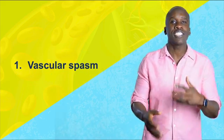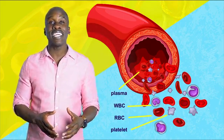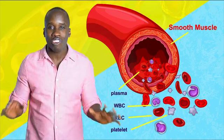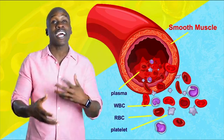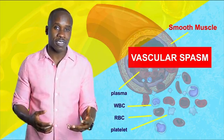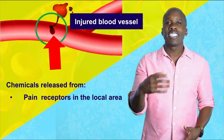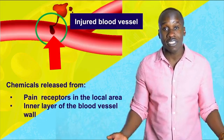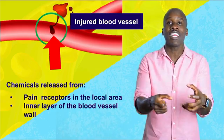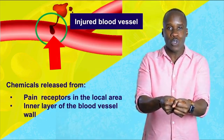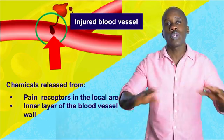First let's deal with vascular spasm, also called vasoconstriction. If we look at the structure of the walls of our blood vessels, we see that the middle layer contains smooth muscle. Anytime you see muscle, you can know that contraction can happen. In response to the damage of the blood vessel, the smooth muscle layers will actually start contracting. When there's a cut, pain receptors release chemicals in that local area, and the cells lining the inner layer of the blood vessel wall also release chemicals. Those chemicals cause the smooth muscle to contract, restricting the flow of blood — like squeezing a hose to limit the flow of water.